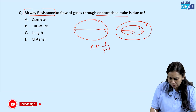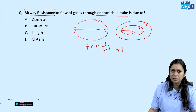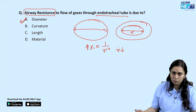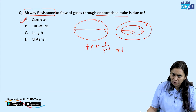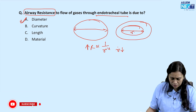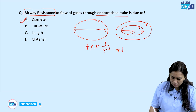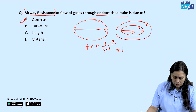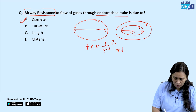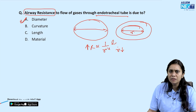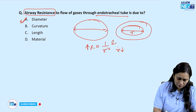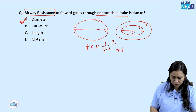Resistance is inversely proportional to radius to the power of 4 (Poiseuille's law). So as radius decreases, resistance increases dramatically. Curvature and length also affect resistance — resistance is directly proportional to length — and material matters too. However, keeping all other factors constant, the diameter or radius of the ETT affects resistance the most. Therefore, the answer is diameter.